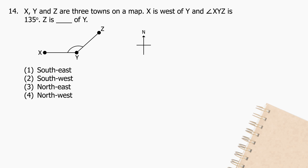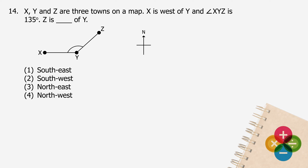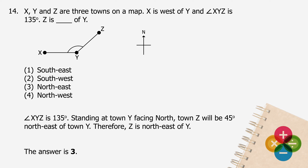Question 14: X, Y, and Z are three towns on a map. X is west of Y, and angle XYZ is 135 degrees. Z is blank of Y. Angle XYZ is 135 degrees. Standing at town Y facing north, town Z will be 45 degrees northeast of town Y. Therefore, Z is northeast of Y. The answer is 3.